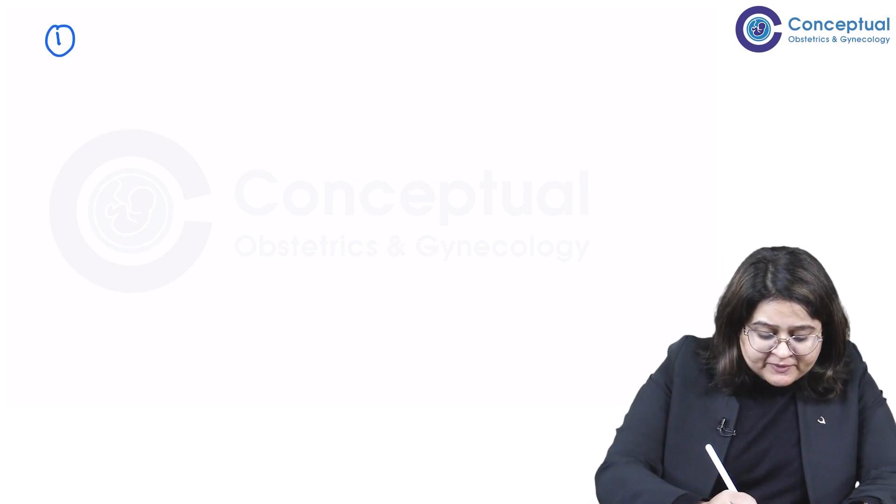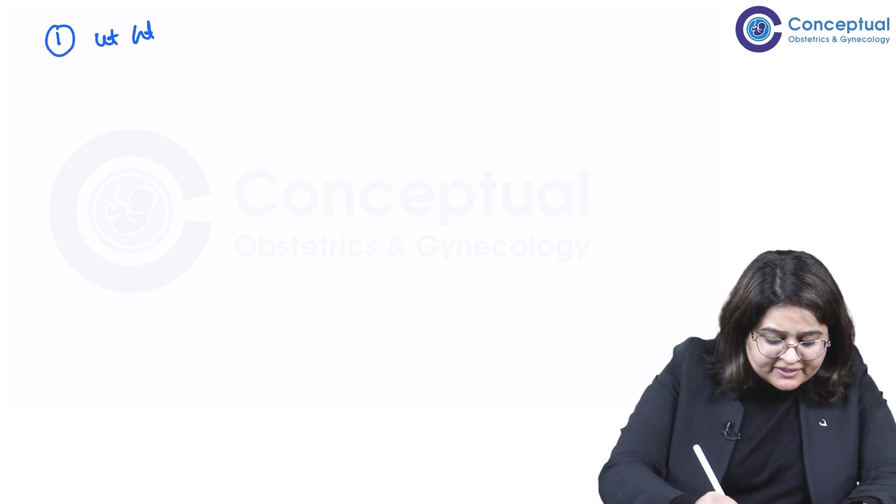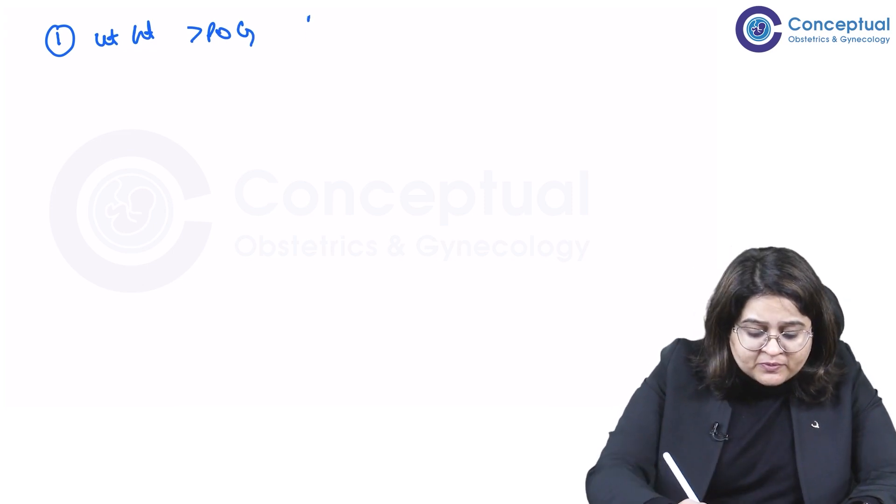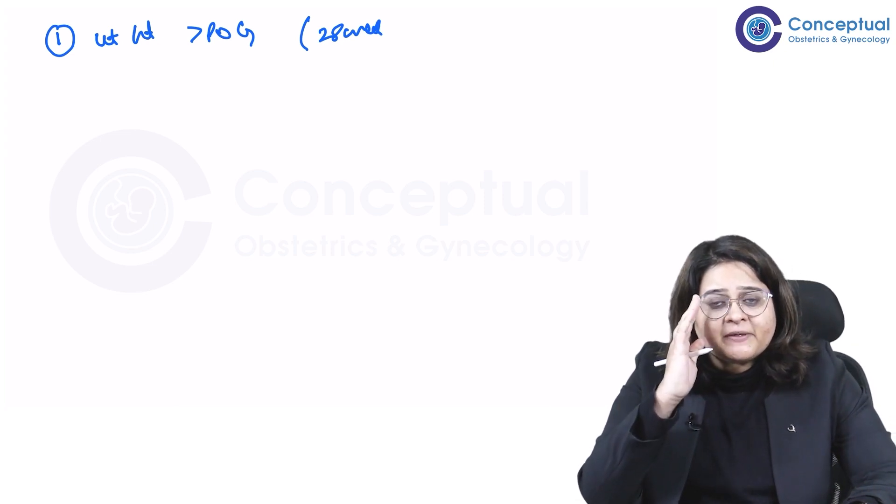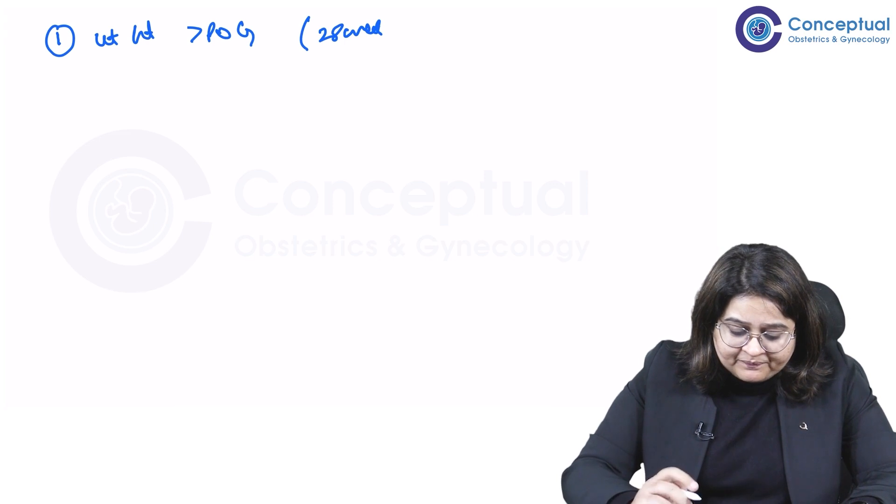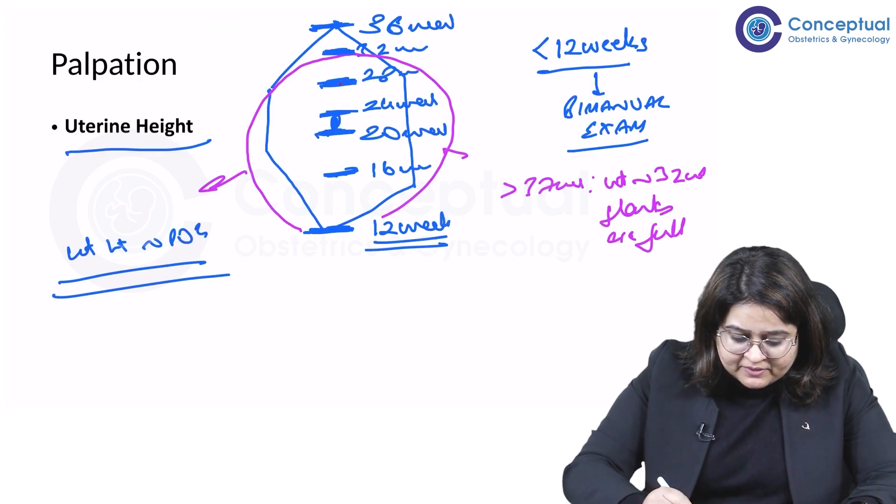So suppose I find a patient whose uterine height is more than the period of gestation. What does this mean? Suppose she is 28 weeks pregnant. I calculate her by her LMP, she's 28 weeks. So I expect the uterus to be here, right?